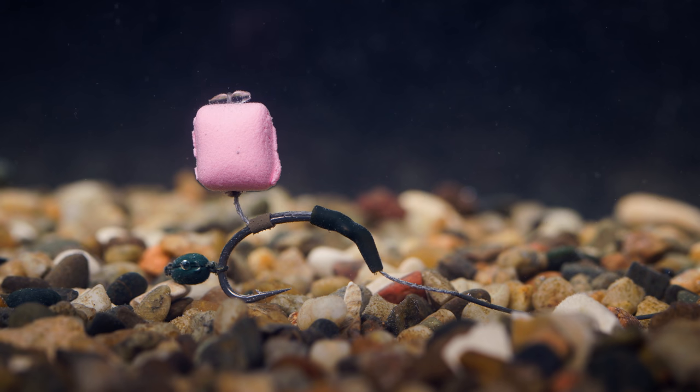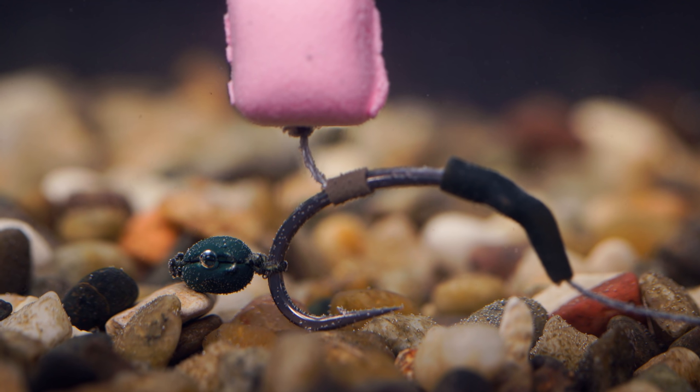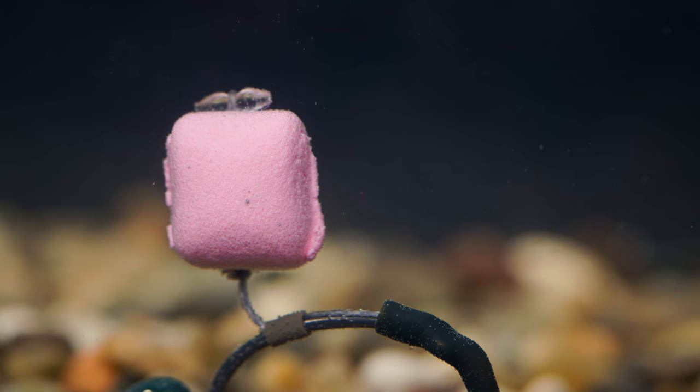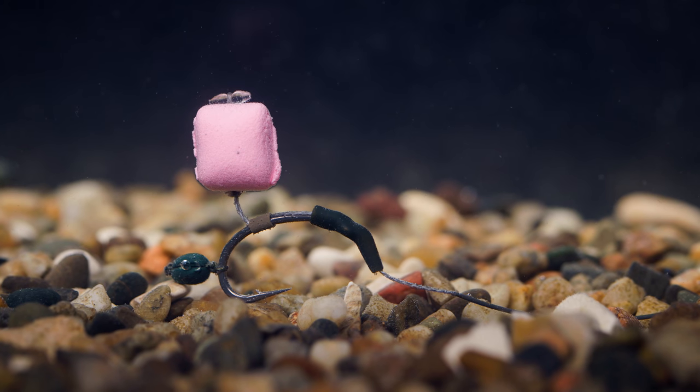Here you can see the unique position of the rig that I mentioned at the start. With the split shot on the bend of the hook rather than under the eye, the hook is sitting in an upright position - it's already in the correct angle for hooking a fish. What's more, it's nice and close to the lake bed, meaning your hook bait will still stand out but it's not too obvious if you're fishing over a clear area or perhaps just a little bit of pellet or a PVA bag.